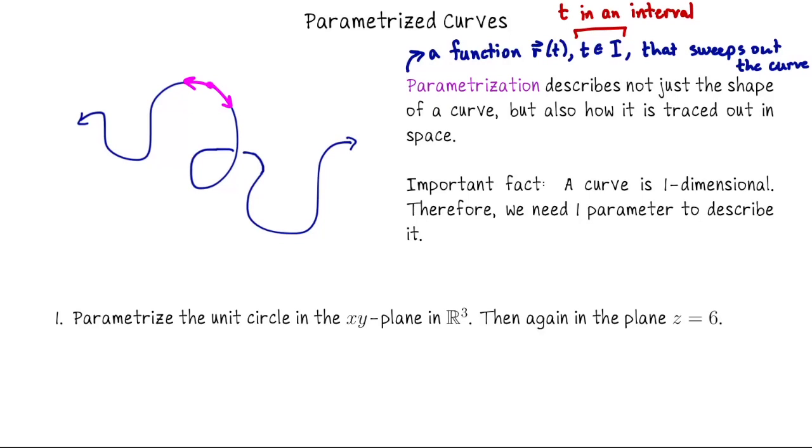To describe a one-dimensional object we need one parameter. So if you're trying to write down a curve and you find yourself wanting to use extra variables, you're not doing it correctly. You need to find a description that's just R of t for one parameter t. Okay, let's start with the example of the unit circle. So we have the unit circle in the xy-plane in R3.